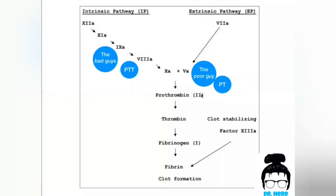Now, in order to reach the common pathway, we need two other pathways: the extrinsic pathway and the intrinsic pathway. The intrinsic pathway has four factors: 12, 11, 9, and 8. You can imagine it as if you are going downward, but without the number 10 — so 12, 11, we excluded 10, 9, and 8.